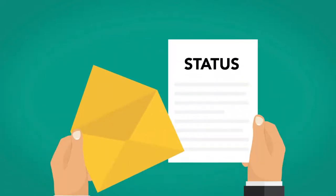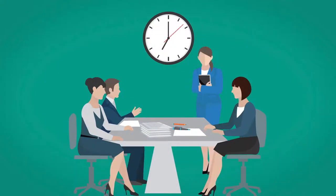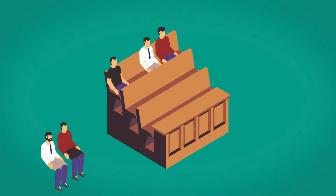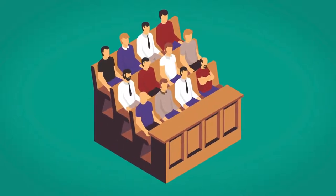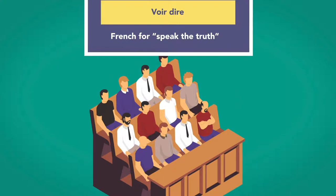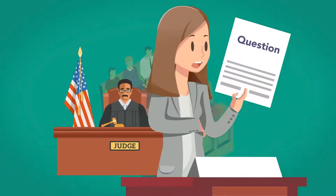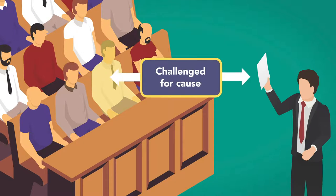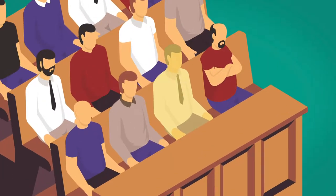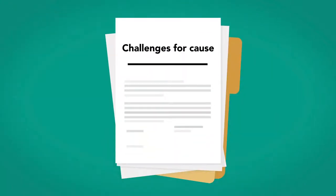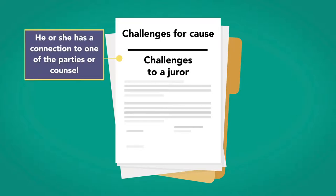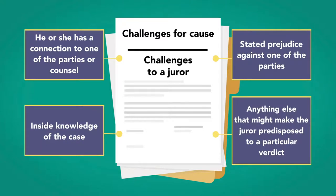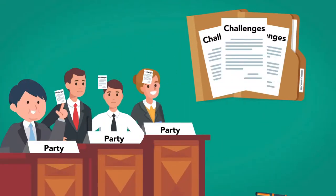In most cases, potential jurors are notified by mail and must appear in court to be questioned regarding their jury service on a particular case. The people called to jury duty are the jury panel. Several members of the jury panel at a time are brought into the courtroom and seated in the jury box. What follows is a process called voir dire, which is French for 'speak the truth.' The jurors can be questioned by both sides and the judge, or just by the judge. During and after voir dire, individual jury panel members can be challenged for cause or by a peremptory challenge. A successful challenge means that the person will not be seated as a member of that jury. Challenges for cause can include a juror's connection to one of the parties or counsel, a stated prejudice against one of the parties, inside knowledge of the case, or anything else that might make that juror predisposed to a particular verdict. Parties can request any number of challenges for cause, though they must be granted by the court to be effective.